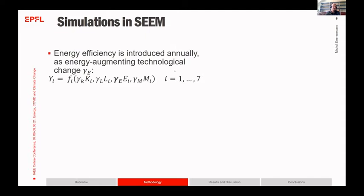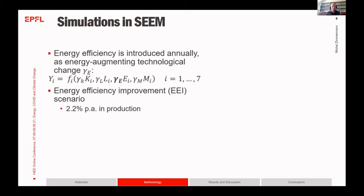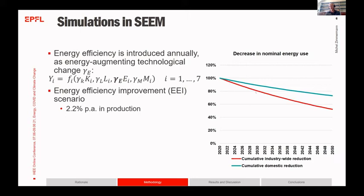We model energy efficiency as energy-augmenting technological change. This efficiency improvement occurs each year, and we assume a 2.2 percent per year increase in our main scenario in production, which nominally would give a roughly 48 percent reduction in industry-wide energy use. Because we wanted to focus on industrial rebound effects, we assume no energy efficiency improvement in households.